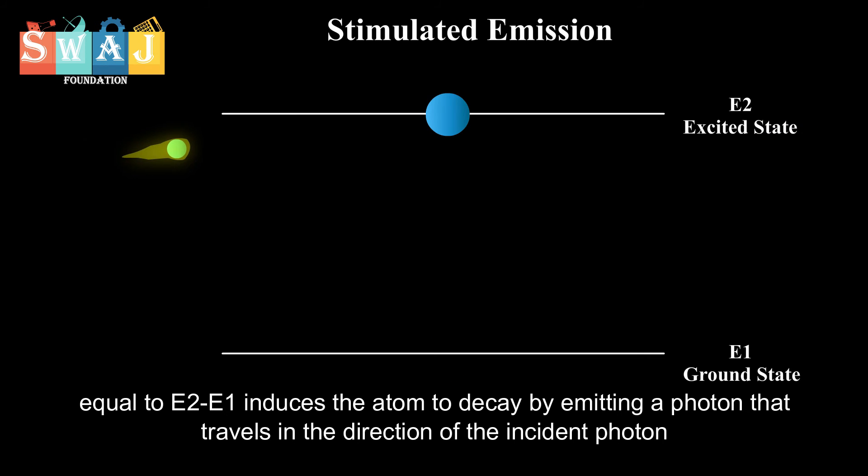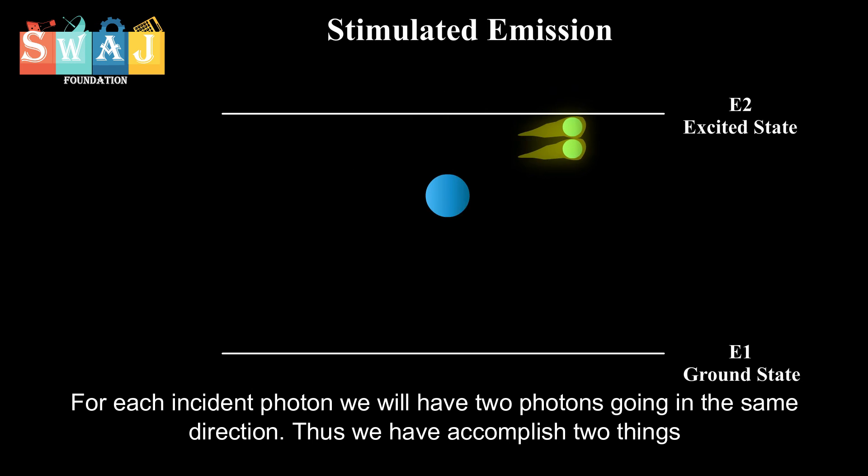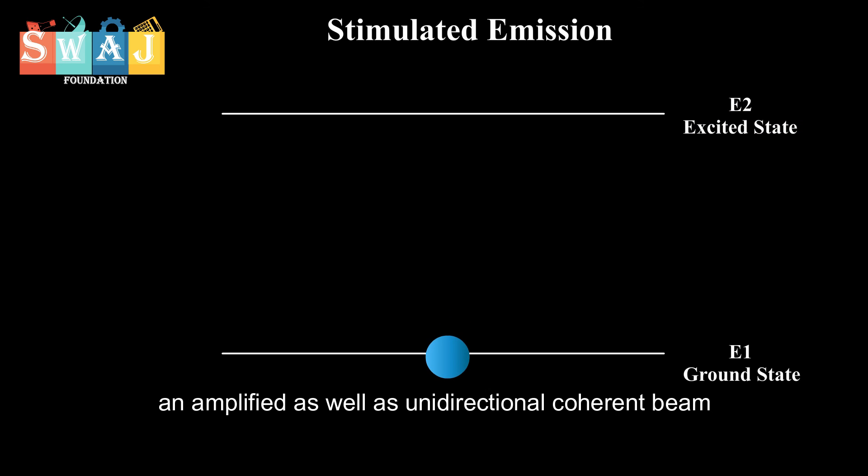For each incident photon, we will have two photons going in the same direction. Thus, we have accomplished two things: an amplified as well as unidirectional coherent beam.